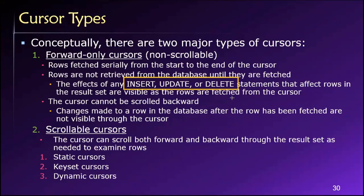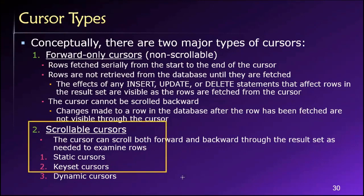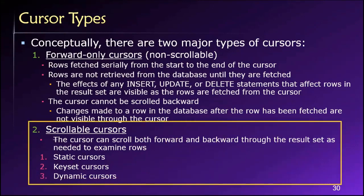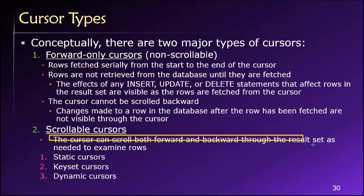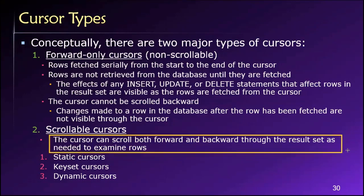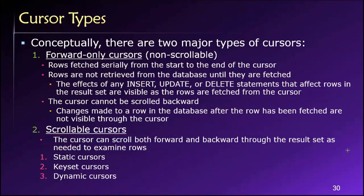Forward-only cursors are very resource-efficient because we just fetch them one at a time and can only move forward, so we don't need to allocate overhead resources for scrolling backwards. We can contrast forward-only cursors with scrollable cursors. The main difference is that in our three different types of scrollable cursors, we can move backwards if necessary. So we can move forward just like with a forward-only cursor, but we can also move backwards. It would be like displaying product reviews on a product page, showing the first 10, then the user says they want 10 more, then they say they want to see those first 10 again — they can scroll backward to see the first 10 reviews. That would be a scrollable cursor.